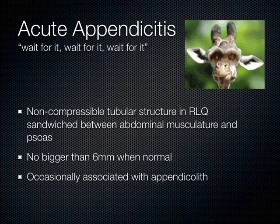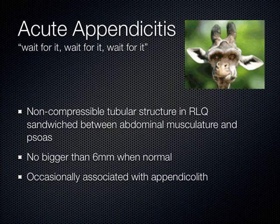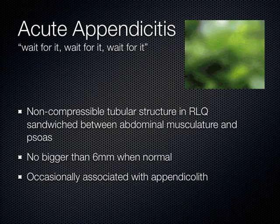There's something called an appendicolith — literally a poopstone. What happens is the appendix hangs off the terminal ileum like a little vestigial thing. If a hardened turd blocks the entrance of the appendix, fluid can't get in and out, and the pressure inside the lumen starts to get higher and higher — that's what causes some of these symptoms.